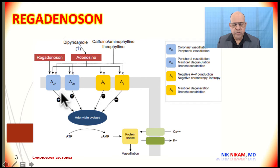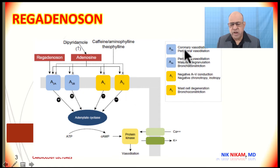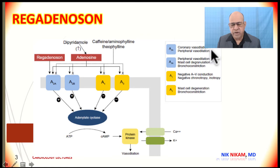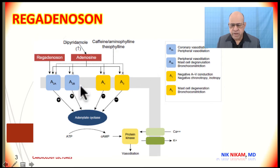Adenosine 1 acts primarily on the AV conduction system by a negative chronotropic effect and negative inotropic effect. Adenosine 2 is divided into adenosine 2A and adenosine 2B. Adenosine 2A is a selective receptor heavily concentrated in the coronary arterial wall that causes profound coronary vasodilatation and peripheral arterial vasodilatation.